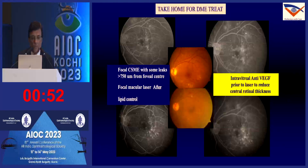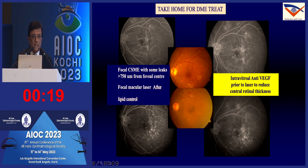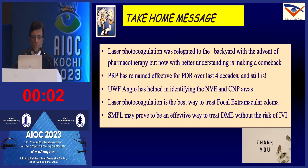Take-home messages for DME treatment: for focal CSME, treat leaks beyond 750 microns from the fovea; ensure good metabolic and lipid control. For leaks central to 750 microns, treat with intravitreal anti-VEGF. There are emerging studies showing laser after anti-VEGF drying of the macula gives more precise burns with better outcomes. Laser photocoagulation was relegated to the background with pharmacotherapy but is making a comeback with better understanding. PRP has remained effective for PDR over four decades and continues to be so.